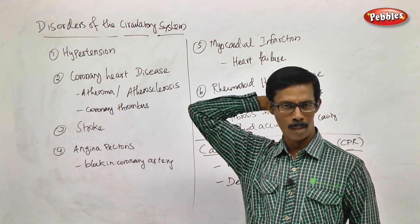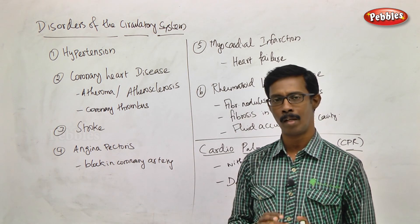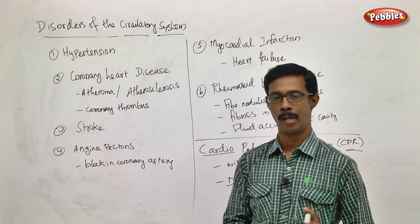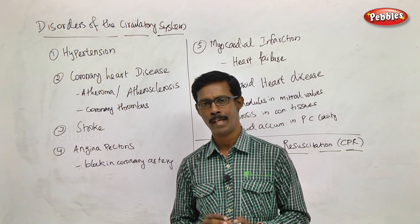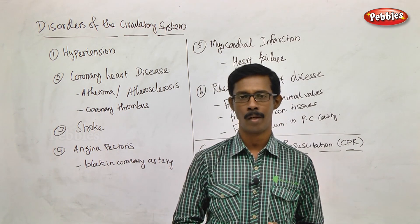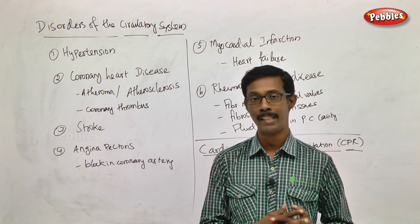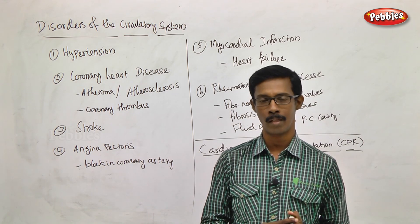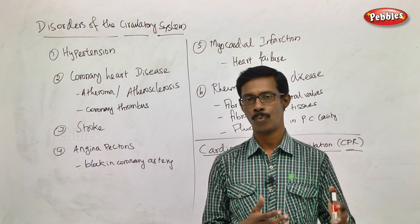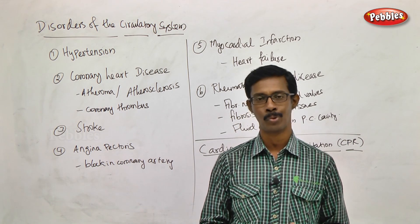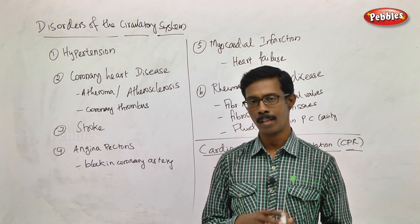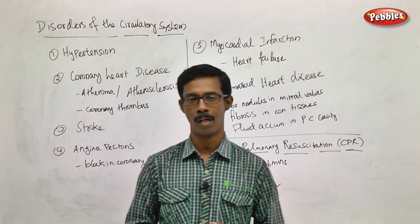What does hypertension mean? The normal blood pressure value is 120 by 80 mmHg. When the blood pressure value is increased beyond that, it is called hypertension. For example, 150 by 90 or 150 by 100 — those values are what is called hypertension.